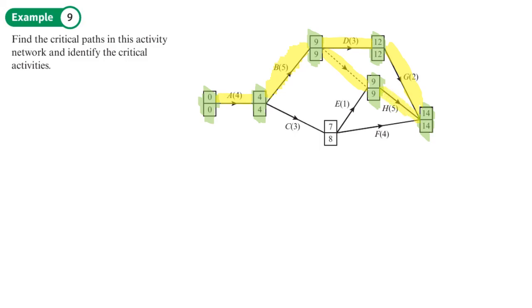So there are actually two critical paths. So the first path goes from A to B to D then to G, and that finishes that route. Or A to B, then from B we've got the dummy that takes us to H. So then that's another critical path.